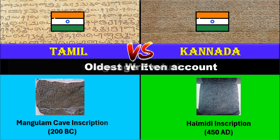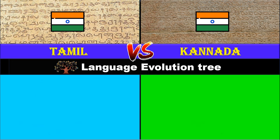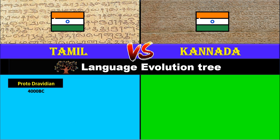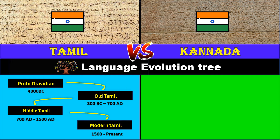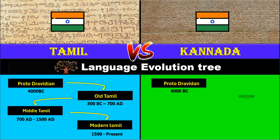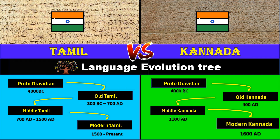Language evolution tree: Tamil evolved from Proto-Dravidian into Old Tamil around 300 BC, then into Middle Tamil around 700 AD, then into Modern Tamil in 1500 AD. Kannada evolved from Proto-Dravidian into Old Kannada, then into Middle Kannada, which became Modern Kannada around the 1600s.